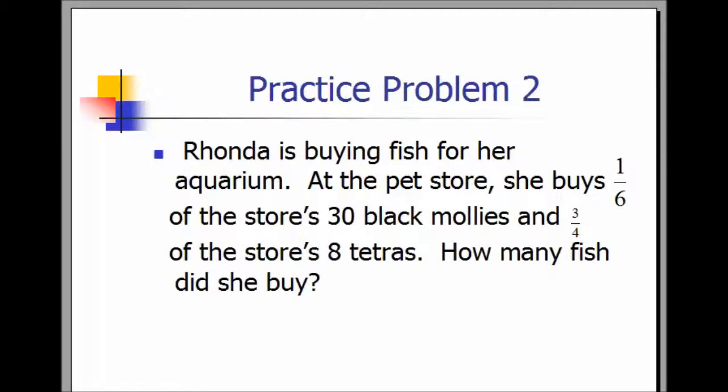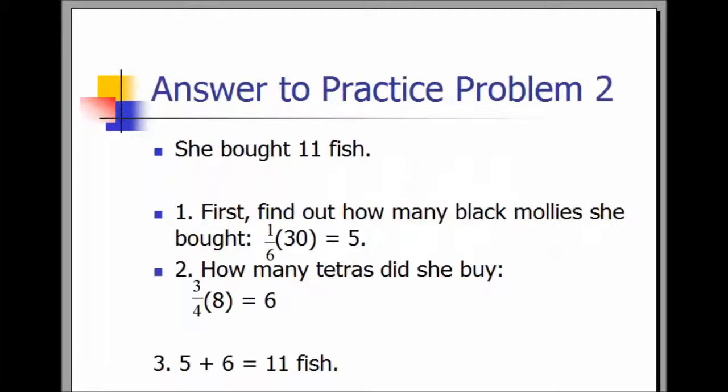Practice Problem 2. Rhonda is buying fish for her aquarium. At the pet store, she buys one-sixth of the store's 30 black mollies and three-fourths of the store's eight tetras. How many fish did she buy? She bought 11 fish.